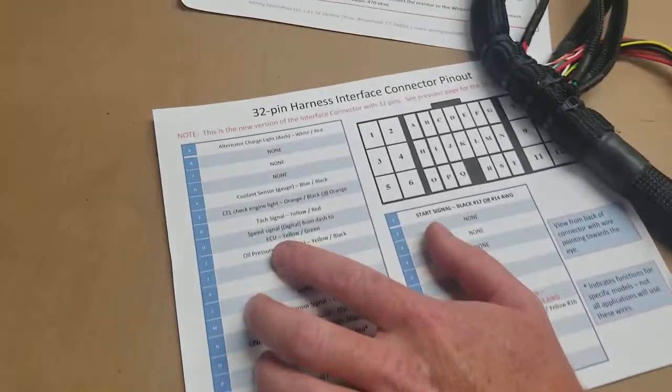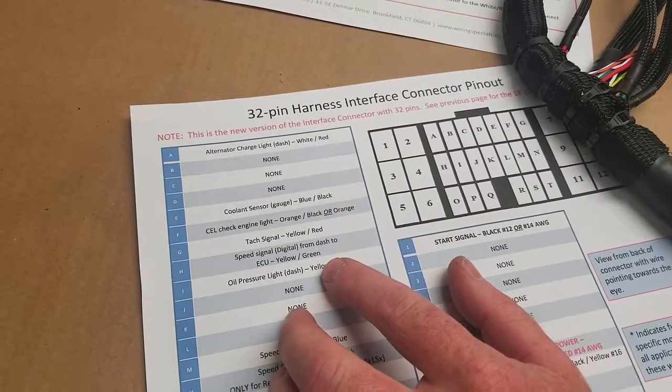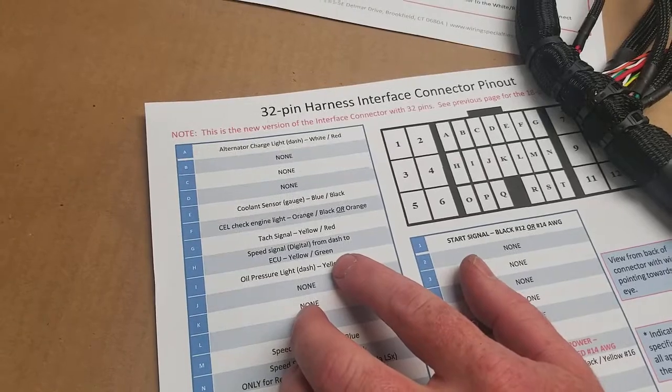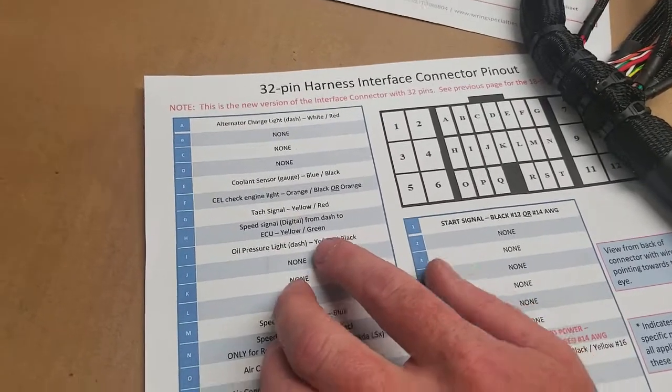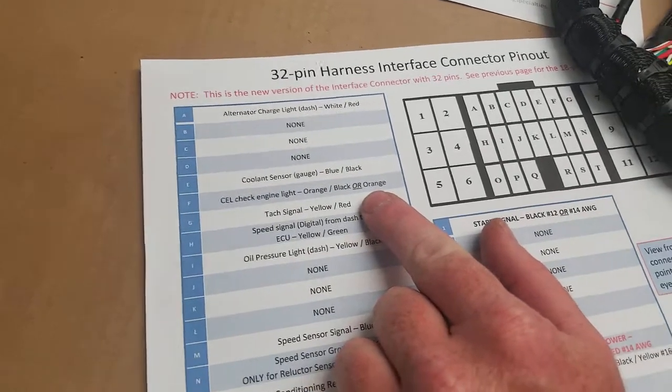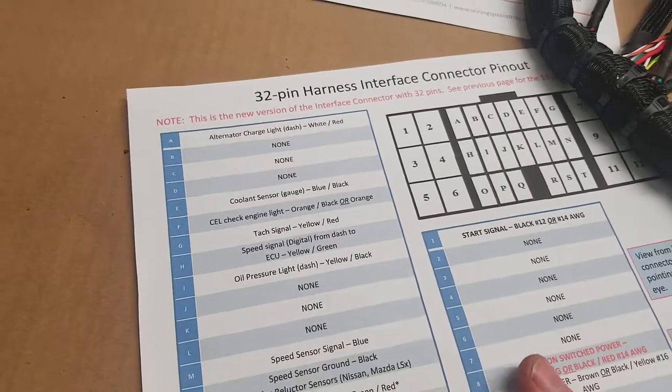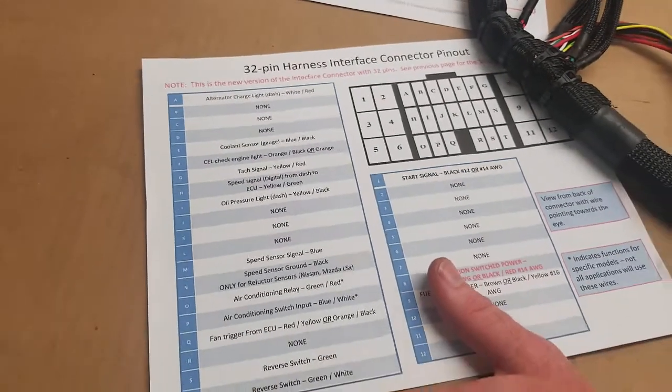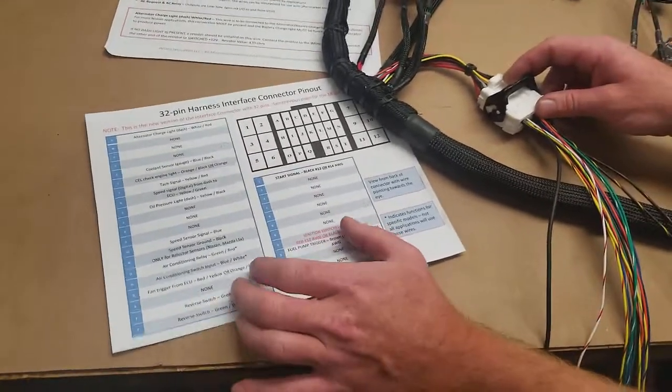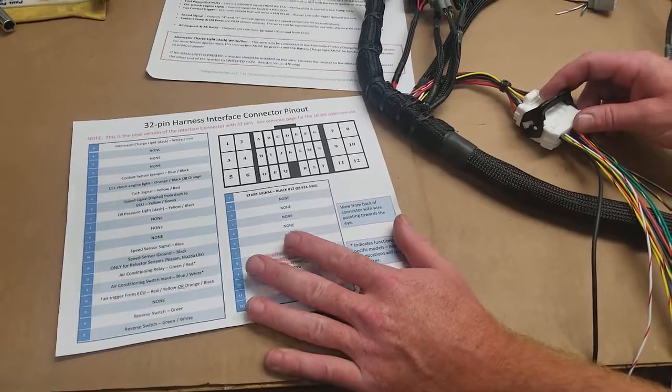Other items that you won't need: speed signal from the dash. That's going to be only found in GTRs and items like that, so that's something you're not going to worry about using our universal harness. Check engine light is also going to be a switched ground, much like the fuel pump and fan relay and all the other items. All of our inputs and outputs are essentially going to be grounds on here. Hopefully this will help you guys figure out installing this in your vehicle and make it a little bit simpler for you.